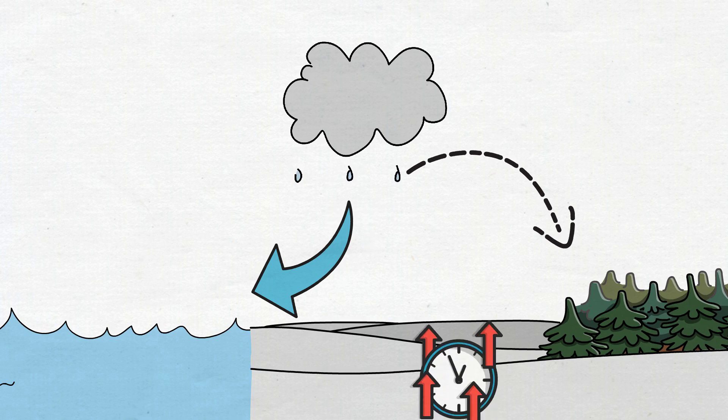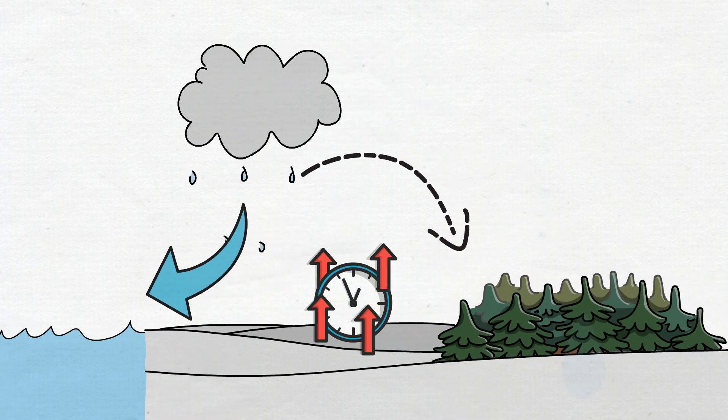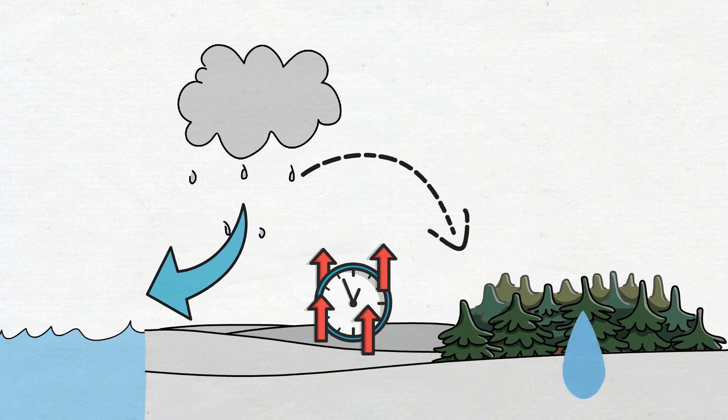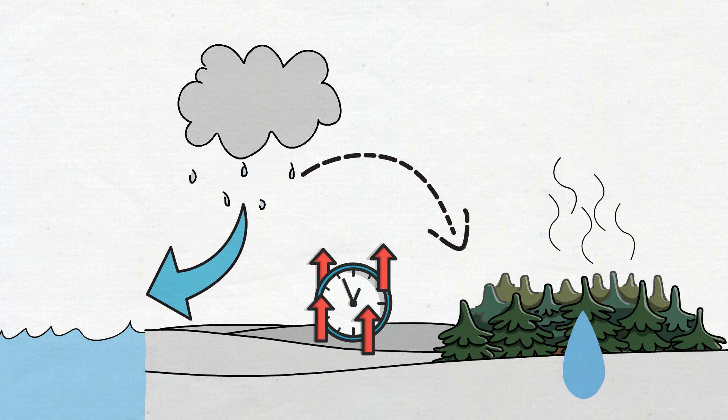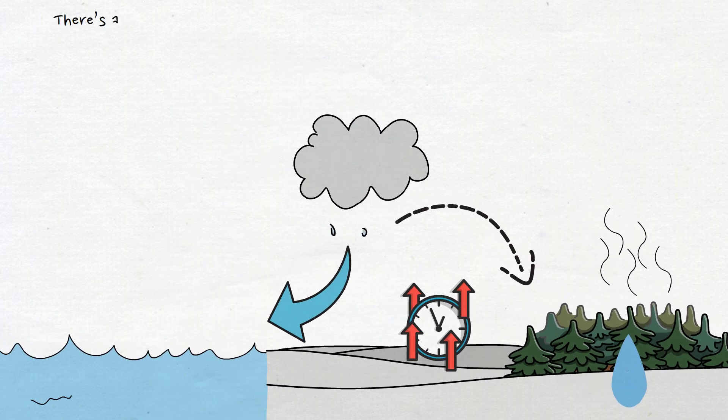There's more water left on the land to actually evapotranspire. If you can imagine, there's a certain amount of water on our continents, but if it's all rushing out during the winter, during the wet season, then there's less water there to evapotranspire.